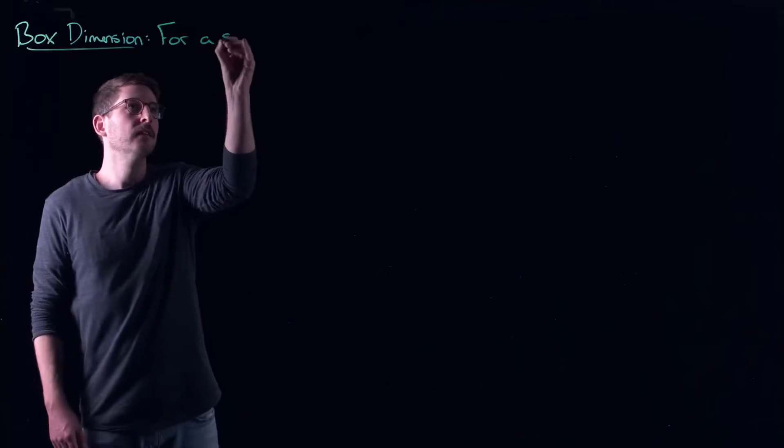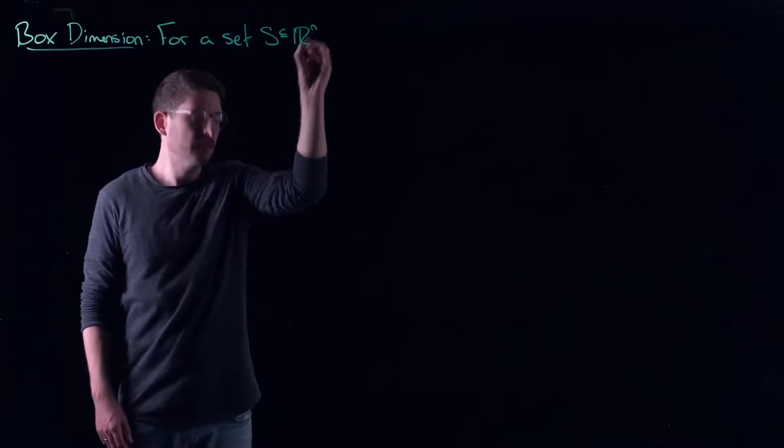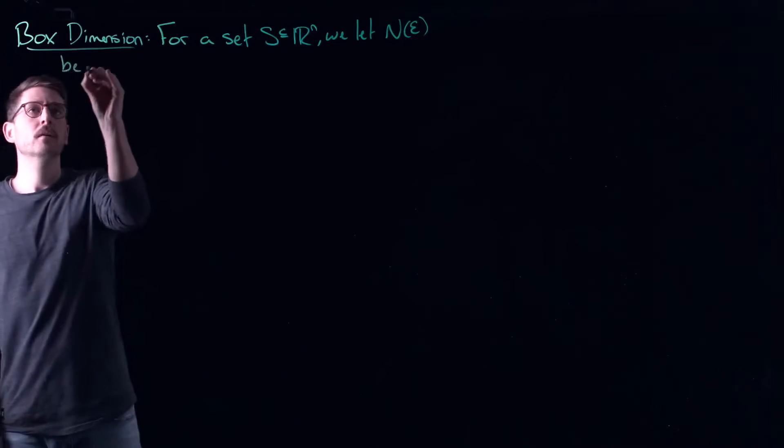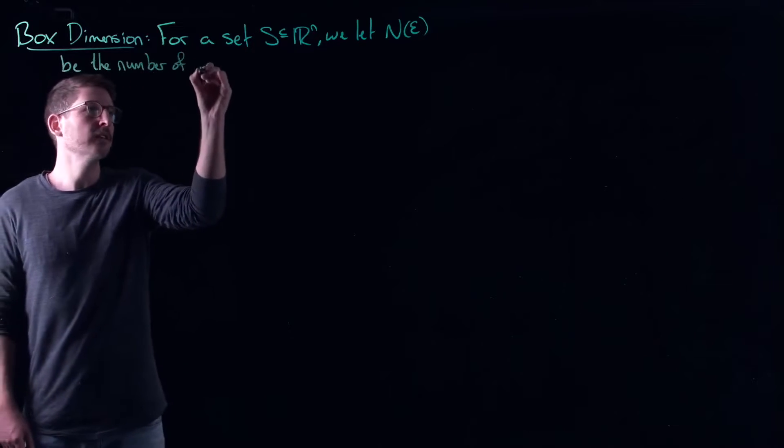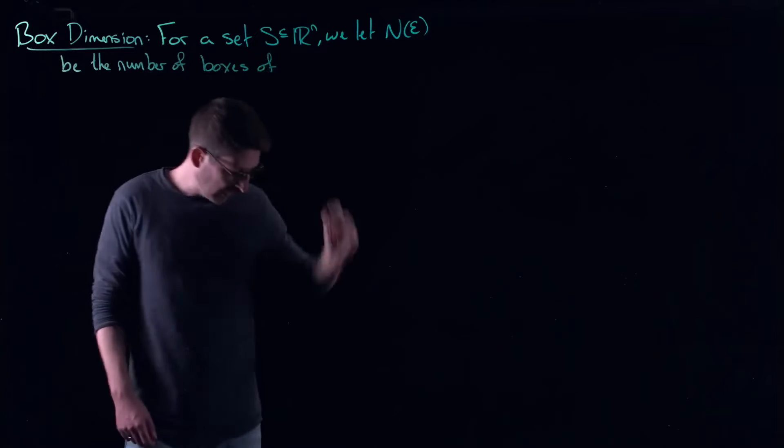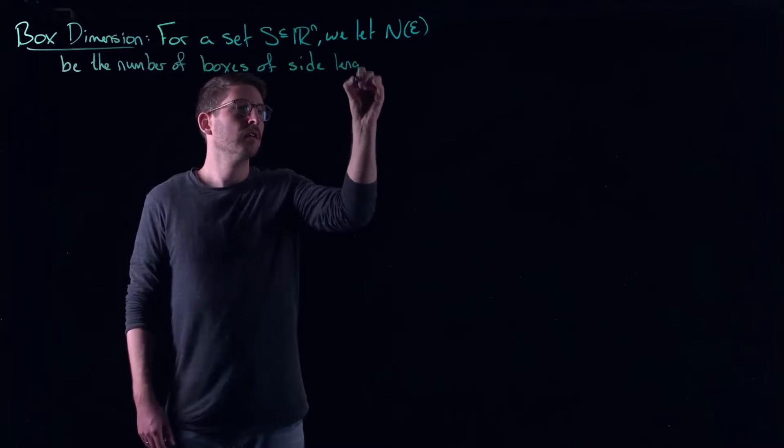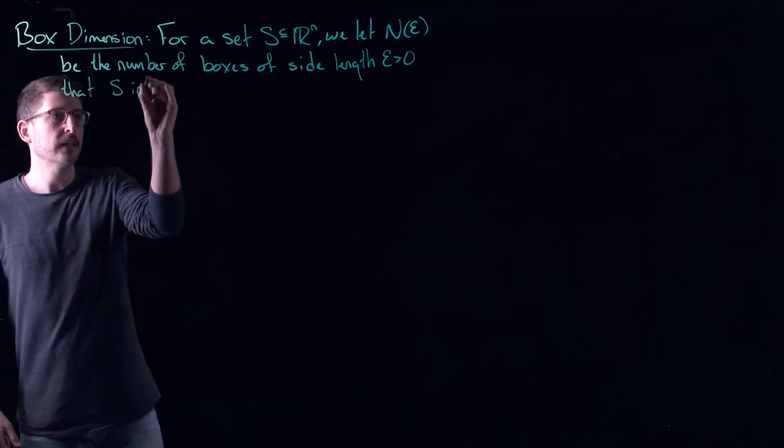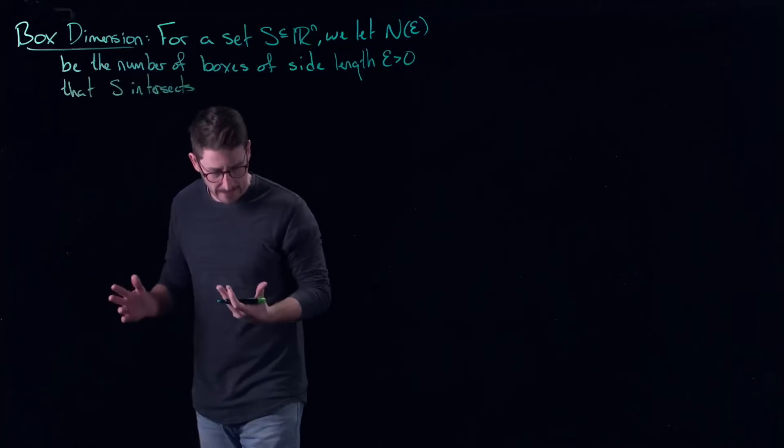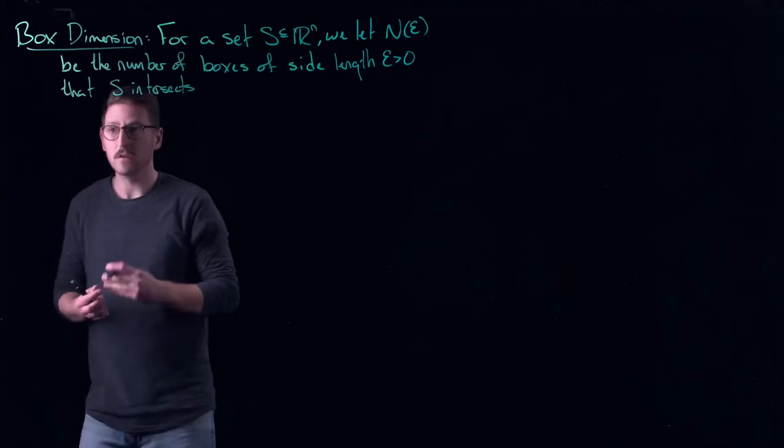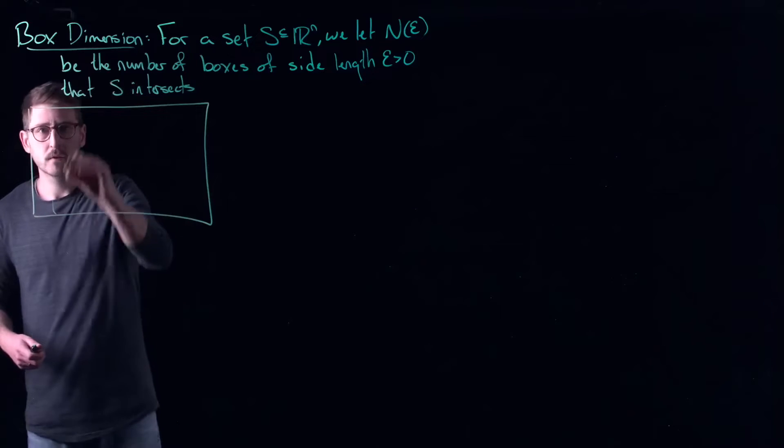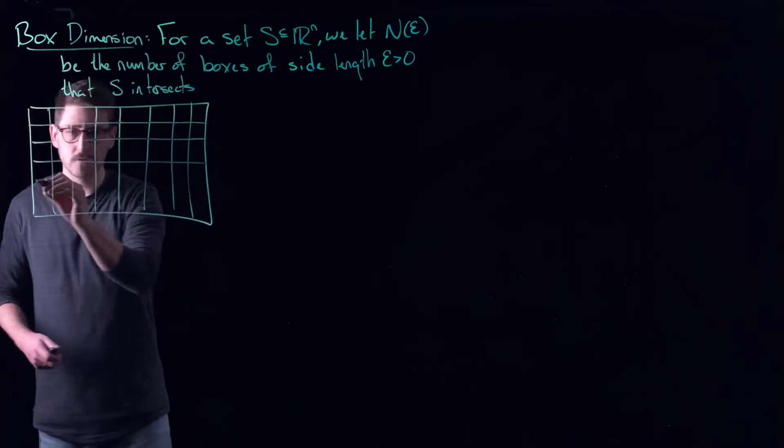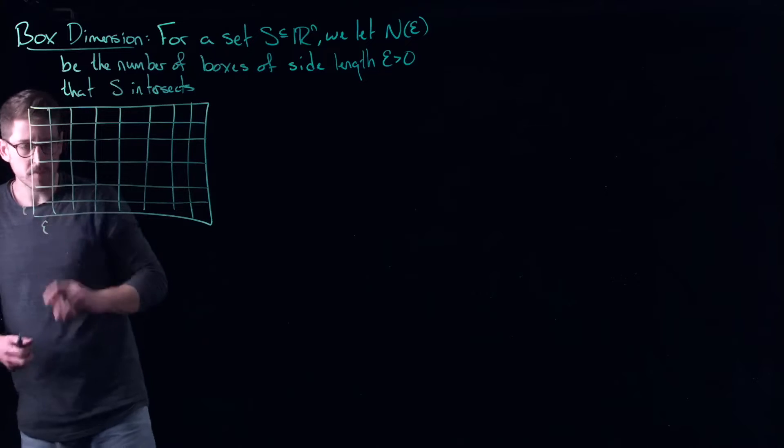So this is a standard measure of a fractal dimension. And so what we say is that for a set, I'll call it S, which belongs to R^n, we let N(ε) be the number of boxes of a side length ε, ε greater than zero, that S intersects. Another way to say this is how many boxes do you need to cover the set S? And so essentially what this leads to is taking a grid of your medium.